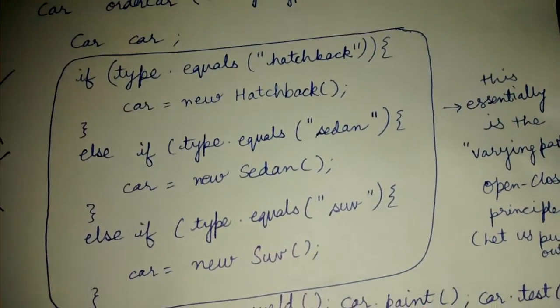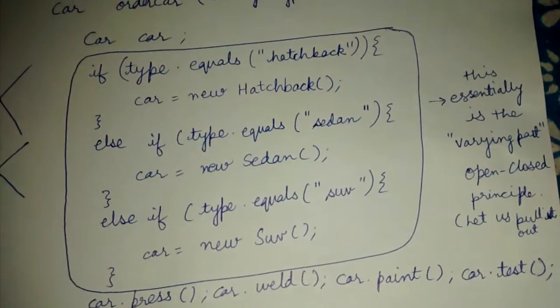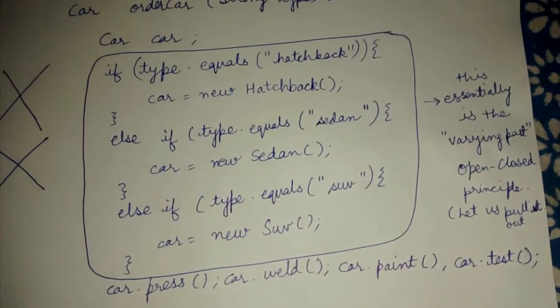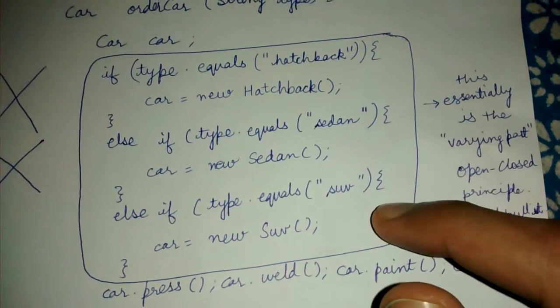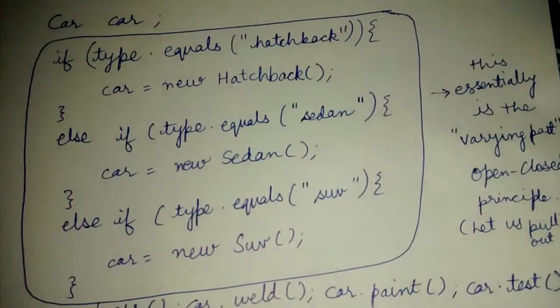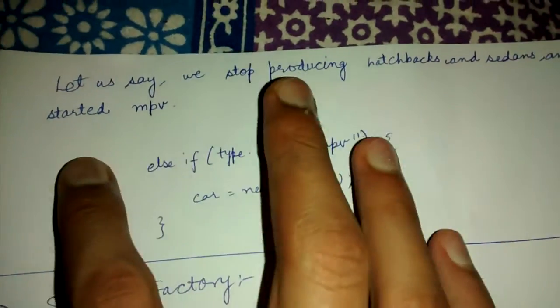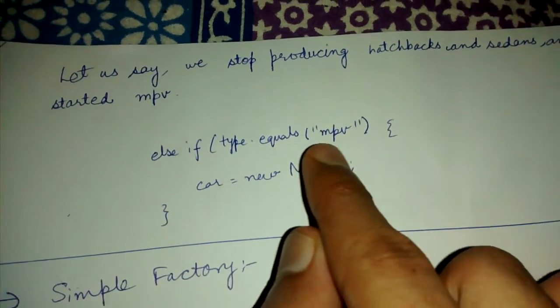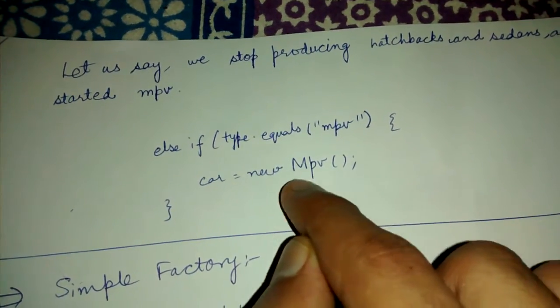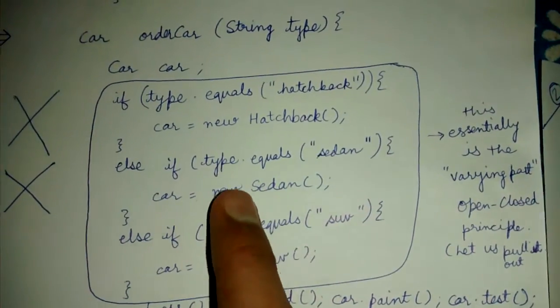This essentially is the varying part. Why is this the varying part? Let's say tomorrow our workshop stops producing sedan and suv, or as we can see in this page, let's say we stop producing hatchbacks and sedans and started mpv. We have to add this statement for mpv: if type.equals mpv, car equals new mpv. MPV basically implies multi-purpose vehicle.